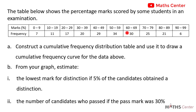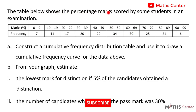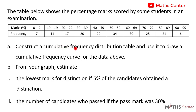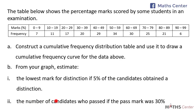The question for this video: the table below shows the percentage marks scored by some students in an examination. In the table, we have the marks given in intervals and their corresponding frequencies. The first part asks us to construct a cumulative frequency distribution table and use it to draw a cumulative frequency curve. The second part asks us to estimate: i) the lowest mark for distinction if 5% of the candidates obtained a distinction, and ii) the number of candidates who passed if the pass mark was 30%.